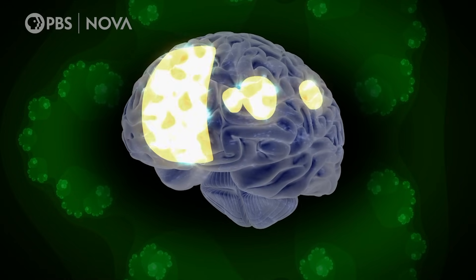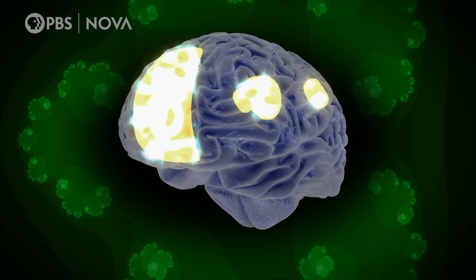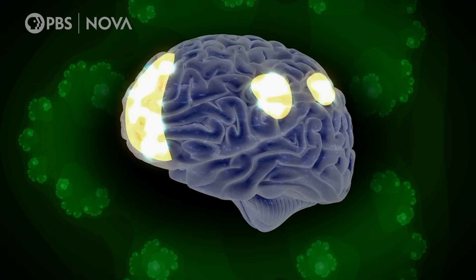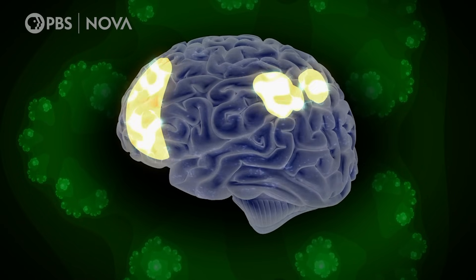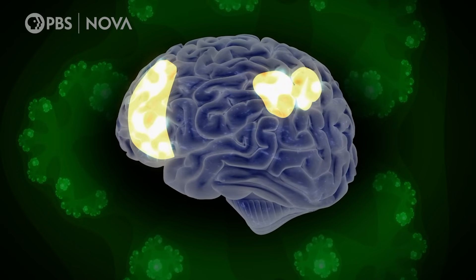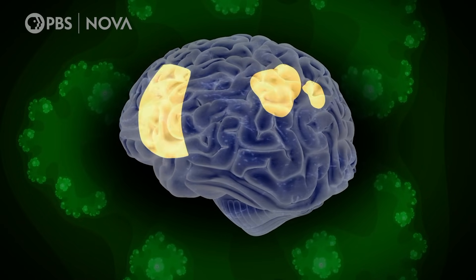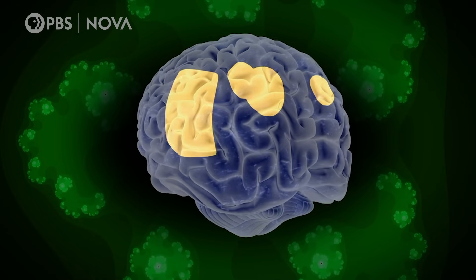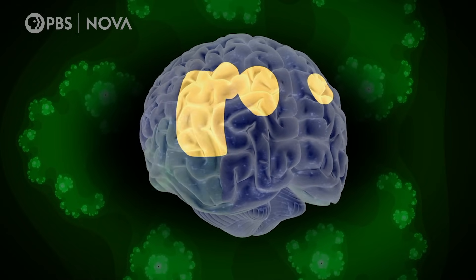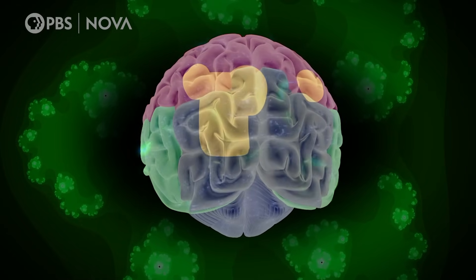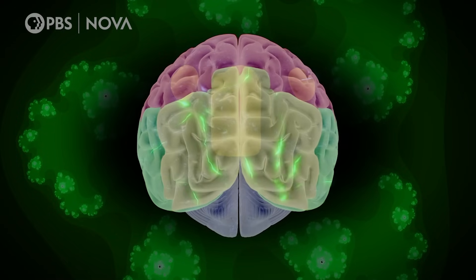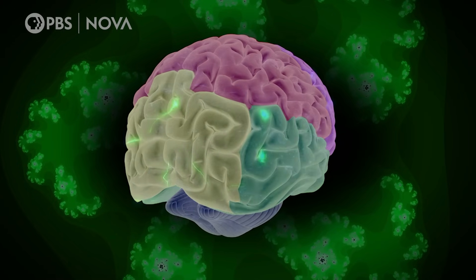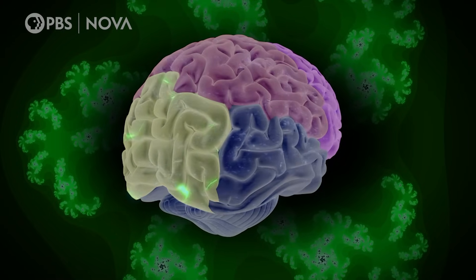The default mode network activates when a person is introspective and under normal circumstances becomes less active when a person shifts their attention to the outside world. But brain studies show that under the influence of a psychedelic, the default mode network is quieted, while other regions of the brain increase communication with each other.